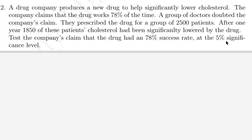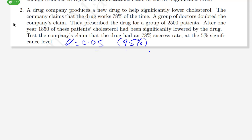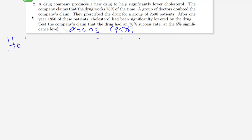After one year, 1850 of the 2500 patients had their cholesterol significantly lowered. Test the company's claim that the drug had a 78% success rate at the 5% significance level. That 5% significance level is the same as alpha equals 0.05. The null hypothesis is that the proportion p equals 0.78, and the alternate hypothesis H1 is that p is not equal to 0.78.